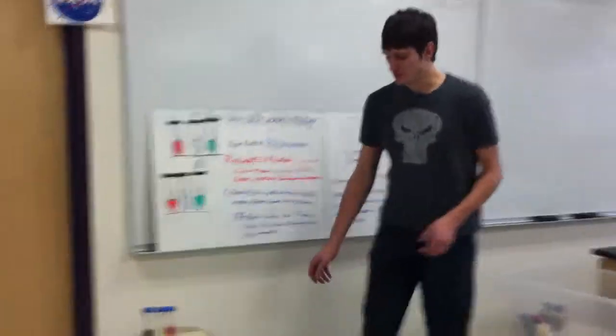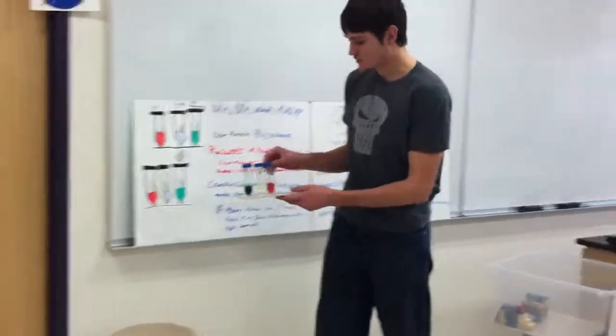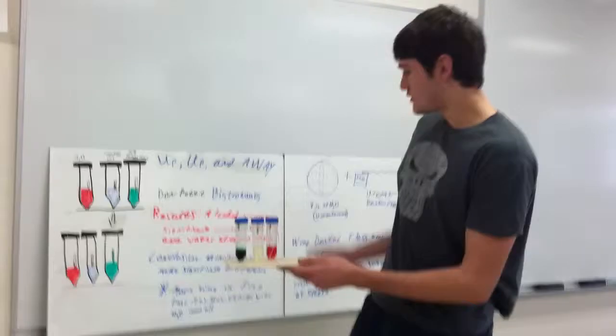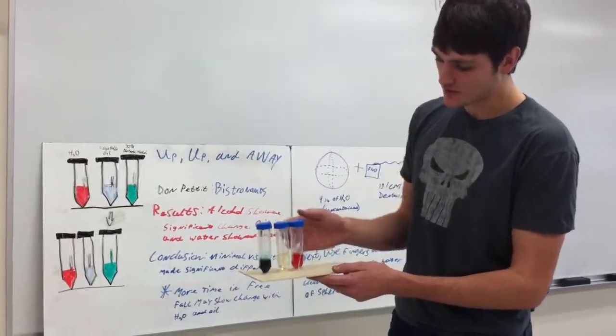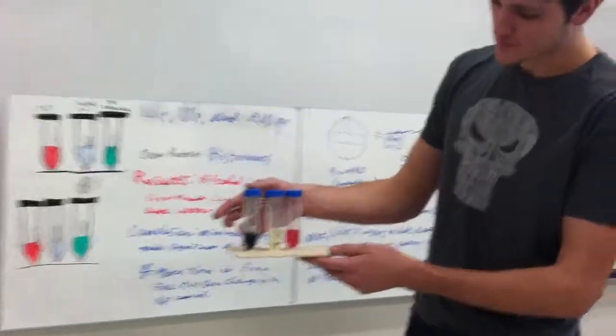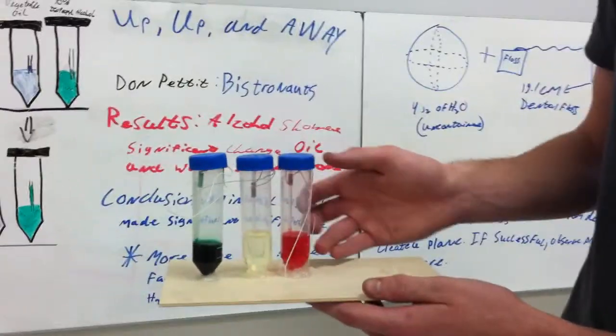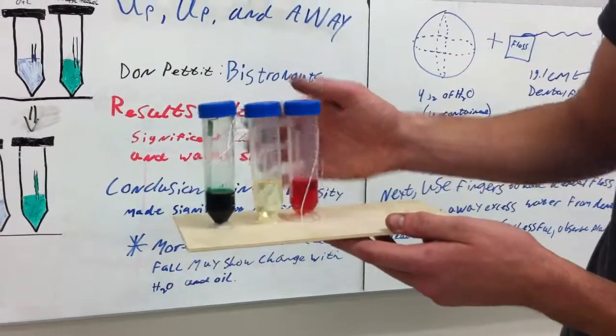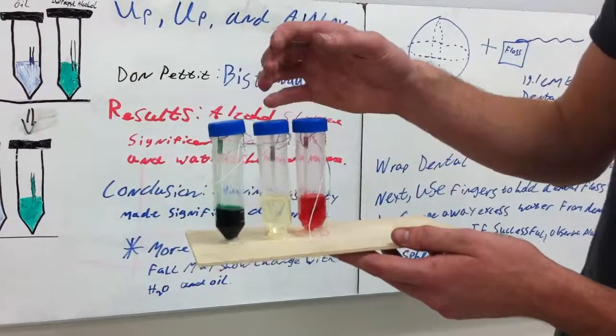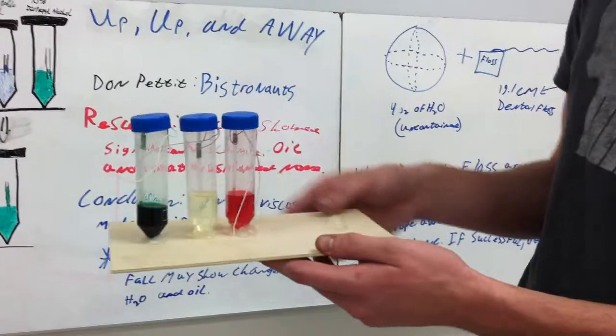And this here would be my actual experiment for what I did in class here today. We have our capsules here, the alcohol with green food coloring, the oil in the middle, and the red over here is the water with red food coloring. And my tubes were suspended with wire that was provided to me.